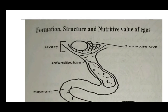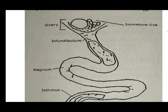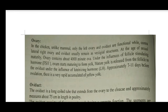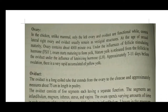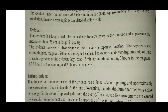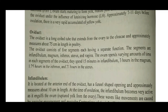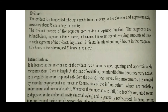The next topic is formation, structure, and nutritive value of eggs. Regarding the ovary: in chickens, unlike mammals, only the left ovary and oviduct are functional, while the right ovary and oviduct remain as vestigial structures. At the age of maturity the ovary contains about 4,000 minute ova. The oviduct is a long coiled tube extending from the ovary to the cloaca, approximately 75 cm in length.